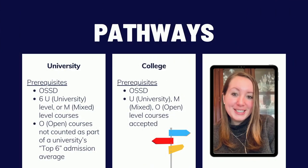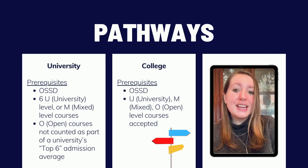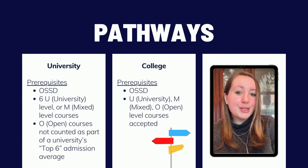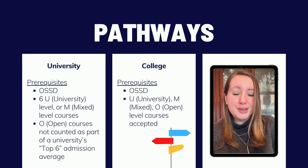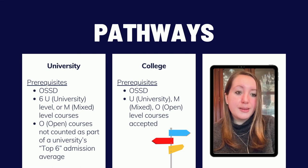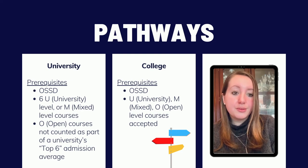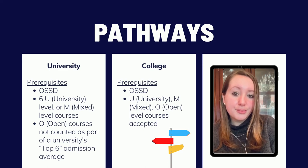Now that we are well acquainted with Zello, we're going to direct our attention to post-secondary pathways and how students can select their courses to achieve post-secondary goals. The first thing to address is the difference in requirements for university versus college programs. To qualify for admission to universities, a student must successfully complete their OSSD and complete six U or M-level courses — U meaning university level and M meaning mixed level.